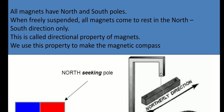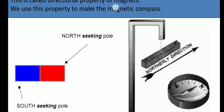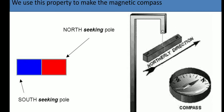All magnets have north and south poles. When freely suspended, all magnets come to rest in the north-south direction only. This is called the directional property of magnets. We use this property to make a magnetic compass. A bar magnet always comes to rest in the north-south direction, which means it shows direction. This directional property helps us to make a magnetic compass.